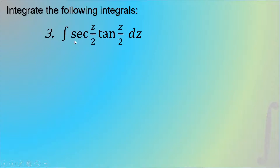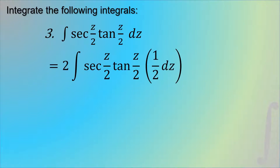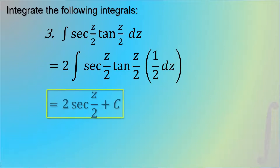Third example: the integral of sec(z/2) times tan(z/2) dz. Letting u equal z/2, then du equals one-half dz. We must have one-half inside the integral sign, so we multiply by 2 outside and proceed with integration. The result is 2 sec(z/2) plus C.